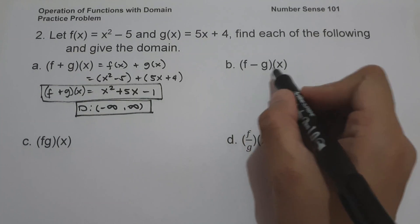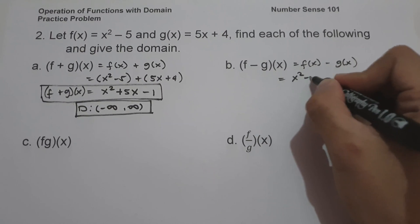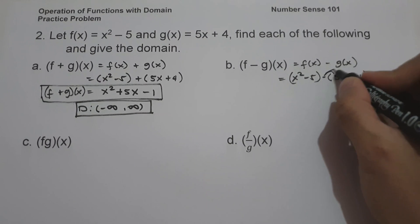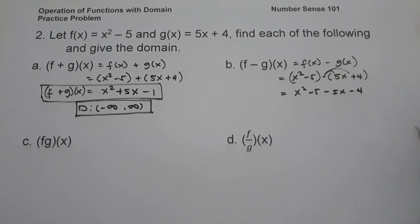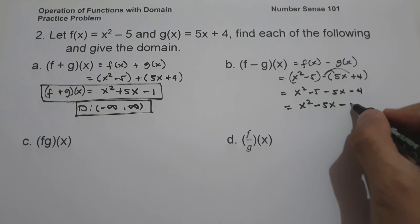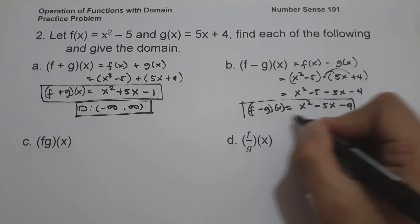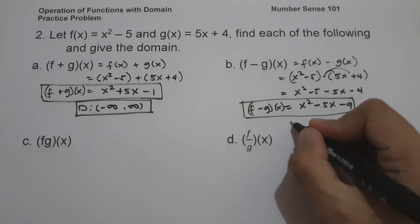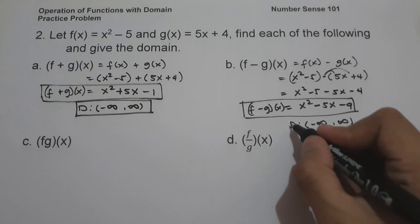On letter b, (f−g)(x) = f(x) − g(x) = (x² − 5) − (5x + 4). Distributing the negative sign: x² − 5 − 5x − 4 = x² − 5x − 9. The domain is all real numbers, written in interval notation as (−∞, +∞).